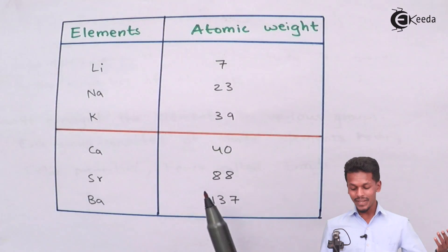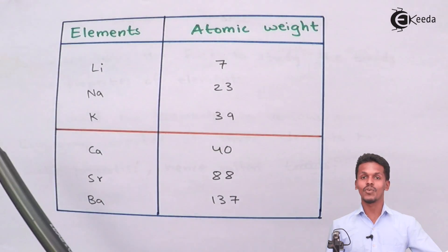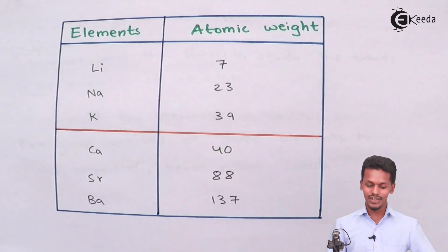So it has been found to be 88.5 which is almost equal to 88. So this is what Dobereiner had classified the elements in which the middle element had an atomic weight average of that of the first and the third element. This is what the first classification was made by Dobereiner.